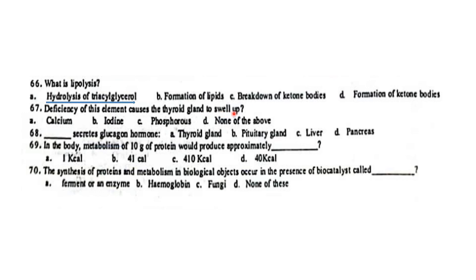Iodine deficiency leads to thyroid gland swelling. The hormone that secretes glucagon is from the alpha cells of the pancreas, which is involved in body metabolism.